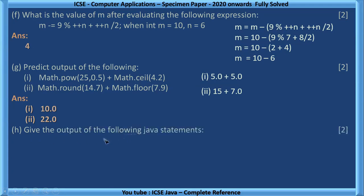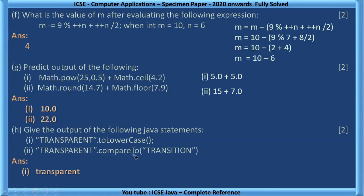Give the output of the following Java statements. Transparent dot to lowercase. The transparent is a string here, it will be converted into lowercase completely. So it becomes transparent in lowercase. The next one, transparent dot compare to transition. See here, trans, trans, both are same in the beginning, and then here P is there, in the next one there is I. So until that it will check both are same, wherever it is differing, that is P is here, I is here. So it will take the ASCII value of P and then ASCII value of I. ASCII value of P is 80, ASCII value of I is 73. So it will take the difference, first one minus second one. So that is 80 minus 73 becomes 7 as the answer.